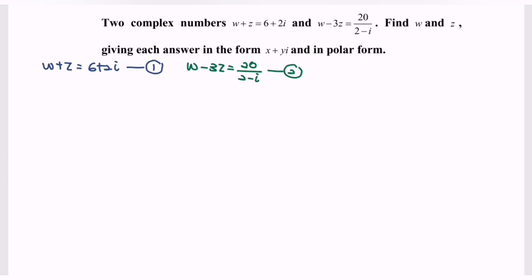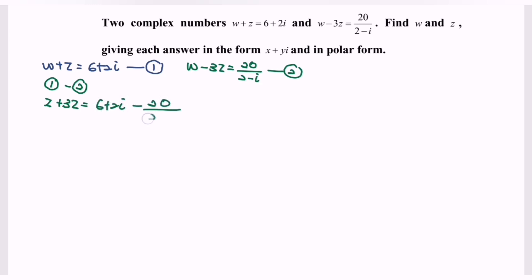To eliminate w, we subtract the second equation from the first. Where we have w minus w we get 0, then z minus negative 3z gives us positive 4z, which equals 6 plus 2i minus 20 over (2 minus i).